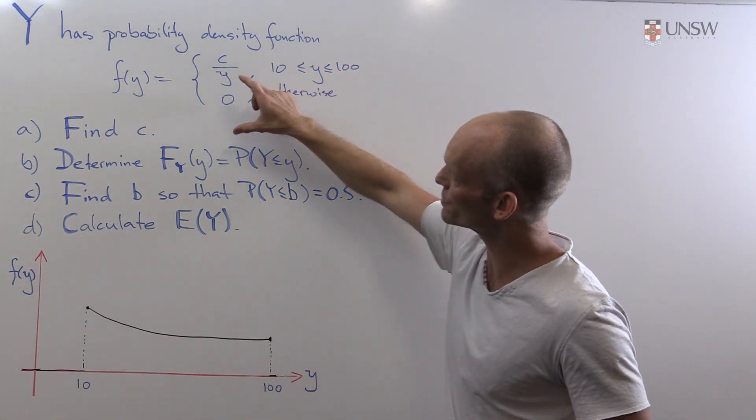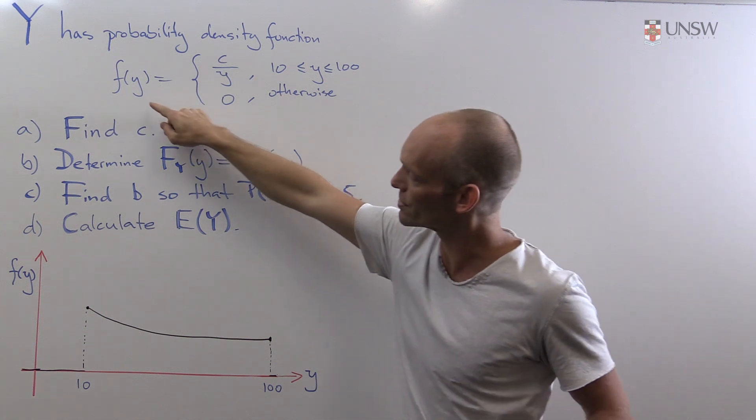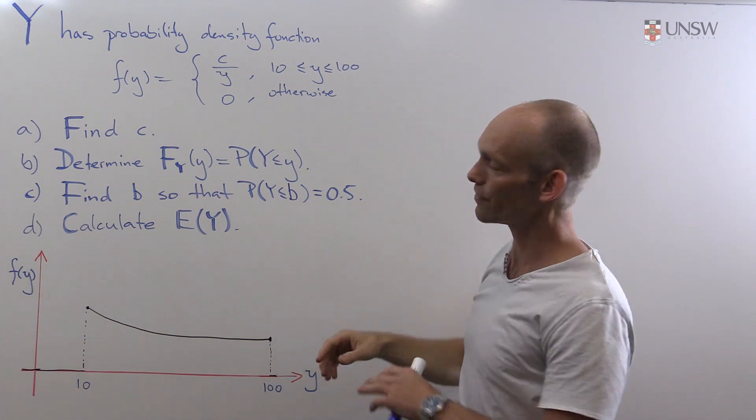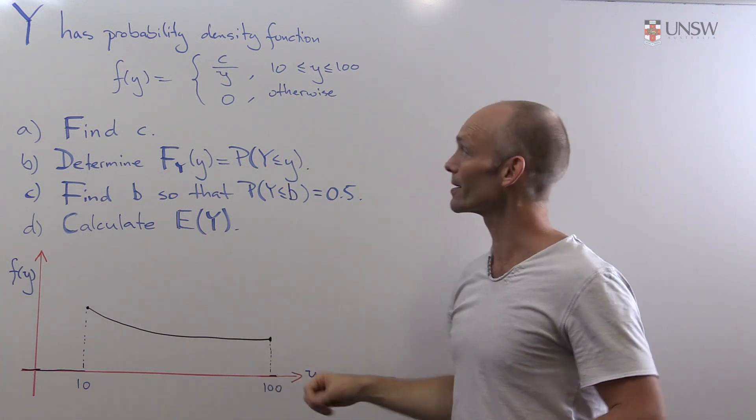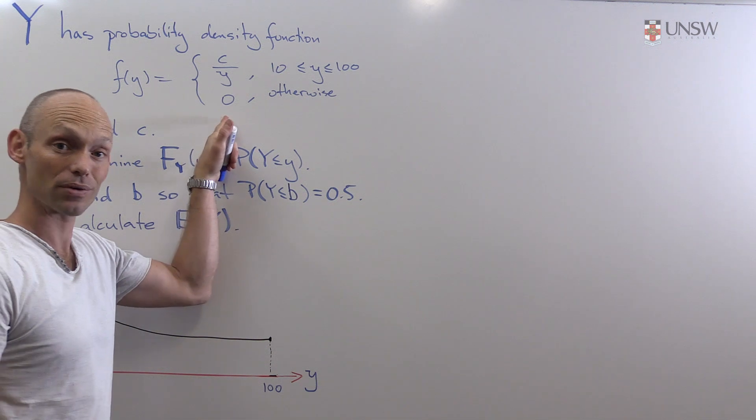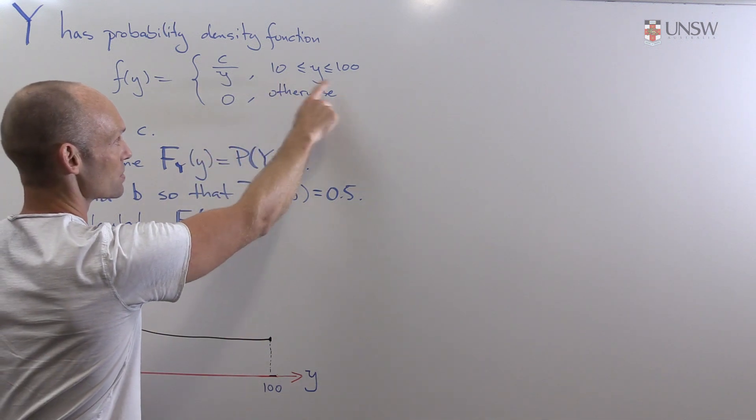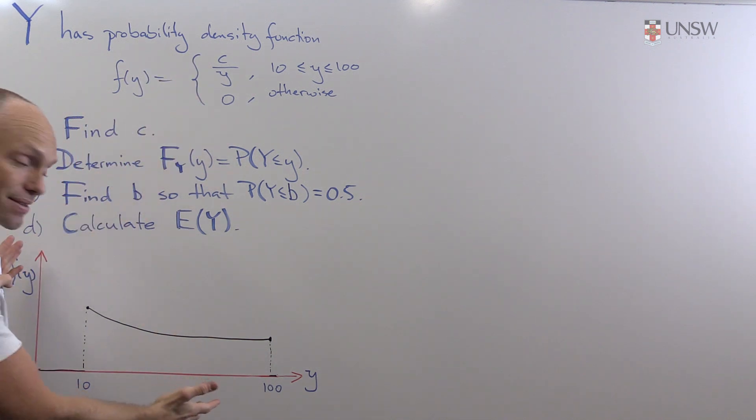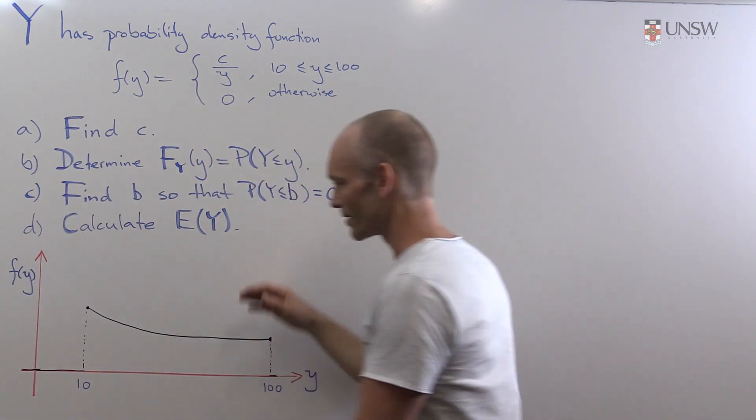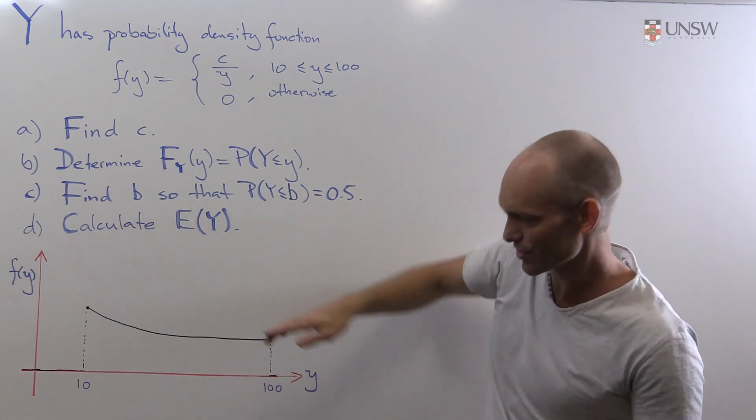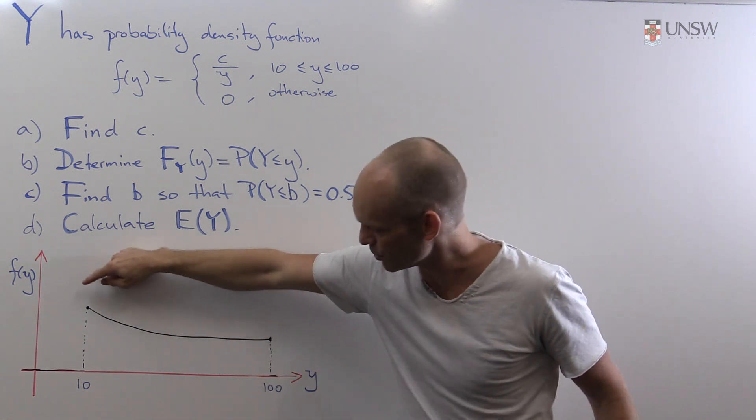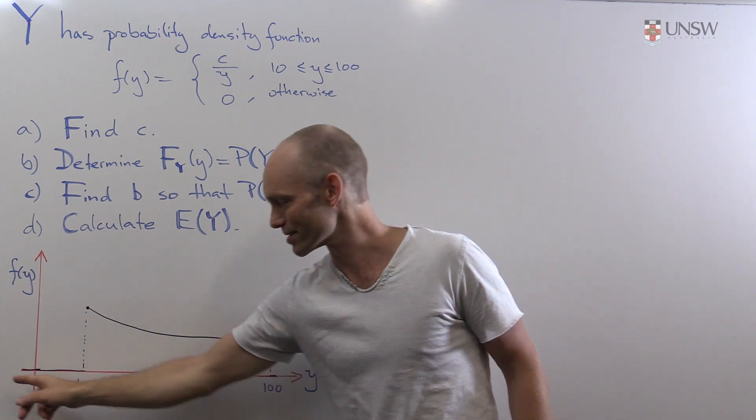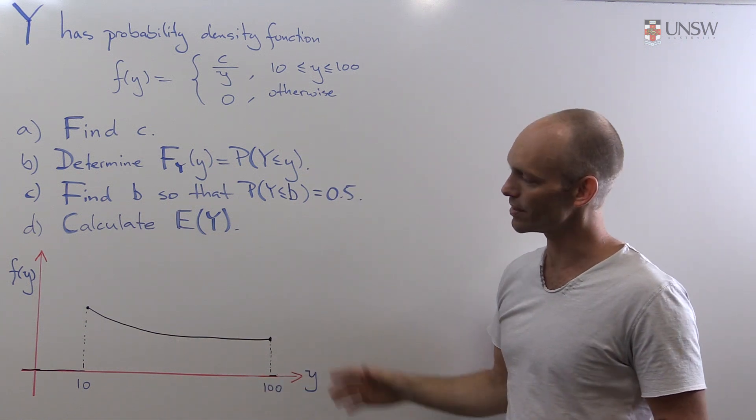So here we have y having this particular probability density function. It's f of y being equal to this function here, defined on all real values y. But the function is equal to zero everywhere except in the interval from 10 to 100. And it's got this form here, some constant c divided by y. And we can see it pictured here in the graph. It's like this sort of relatively flat hyperbola going from 10 to y. And then outside of this interval, it's just zero and so forth.